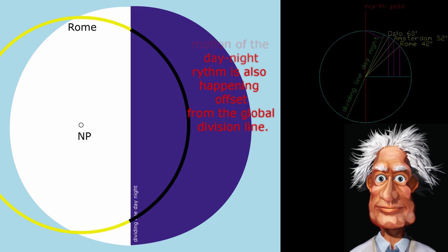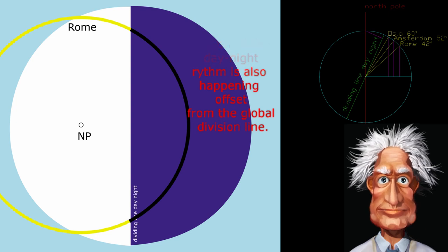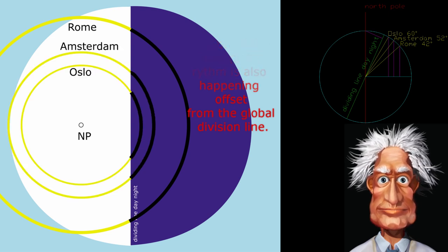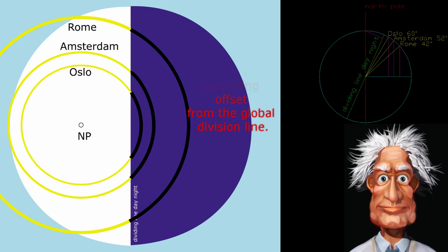All these measurements are taken on July 21, that is with 24 hour daytime on the North Pole.